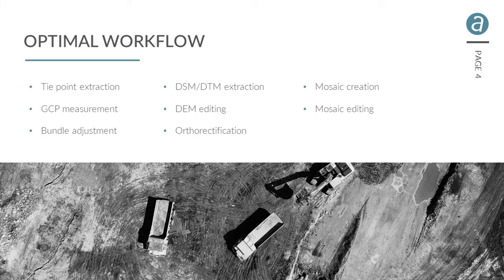Before we get into scripting, let's cover some photogrammetry basics. Correlator 3D is a photogrammetry tool with an optimal workflow to reach your deliverables. You'll always do tie point extraction; you may or may not need GCPs. From there you do a bundle adjustment, create a DSM and/or DTM, do DEM editing, orthorectification, mosaic creation, and possibly mosaic editing. All of these steps can be scripted.